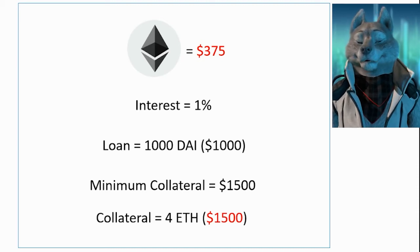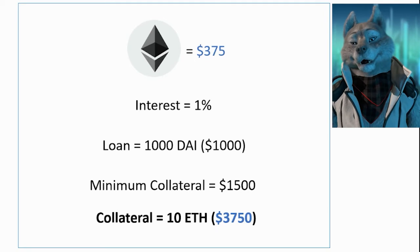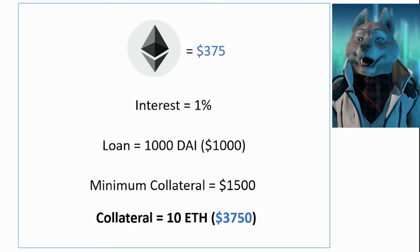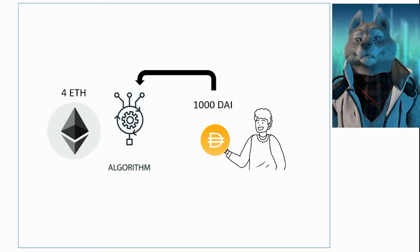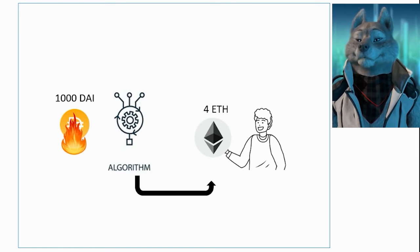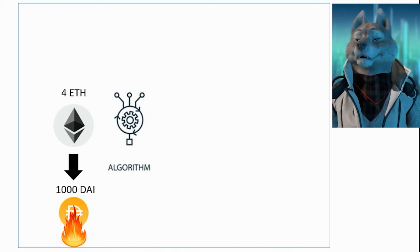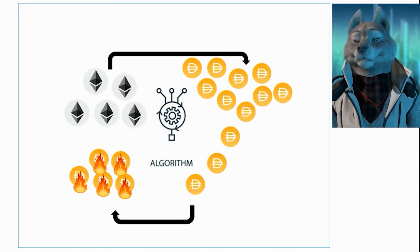It is evident that the higher the value of the collateral, the safer the user is from being liquidated. The moment a user pays off their loan, the deposited collateral is unlocked and the returned DAI tokens are burned. If the user has been liquidated, the collateral is sold to buy DAI tokens, which are burned in the same way. This is a good summary of how the system works, from the creation to the destruction of DAI tokens.